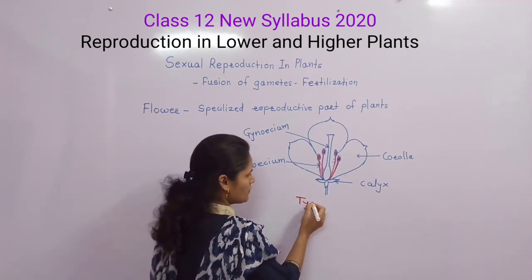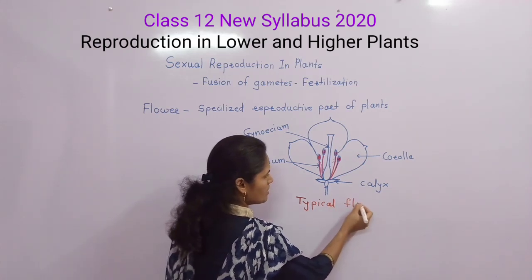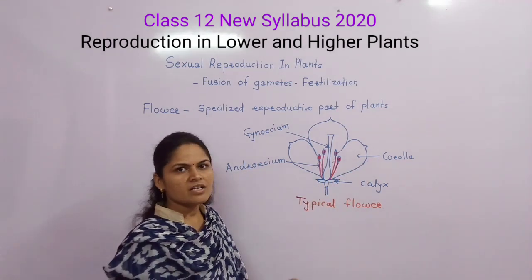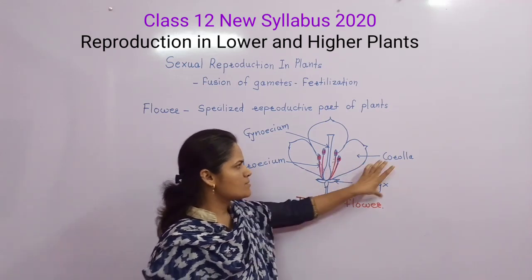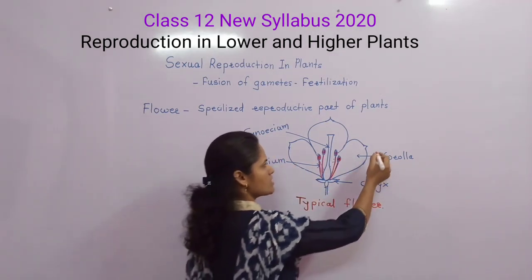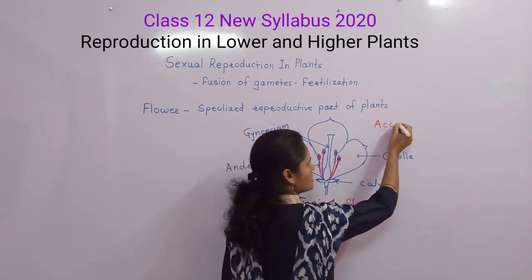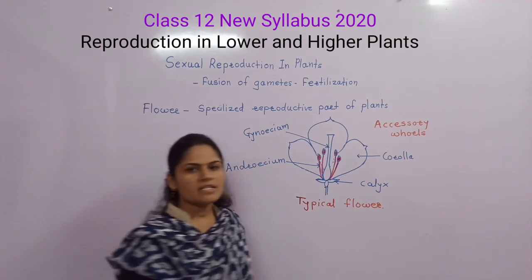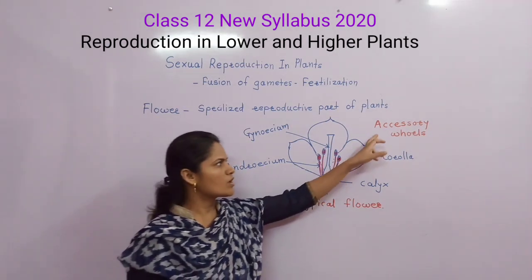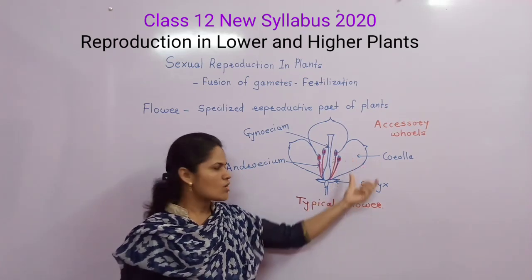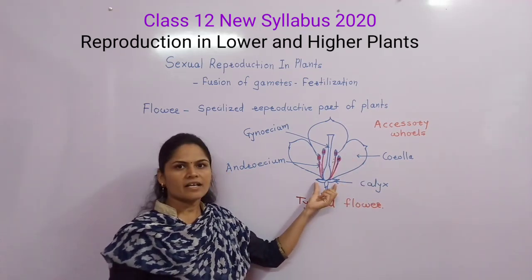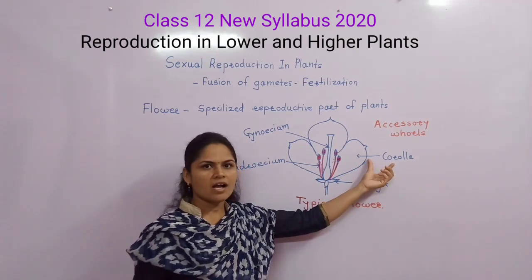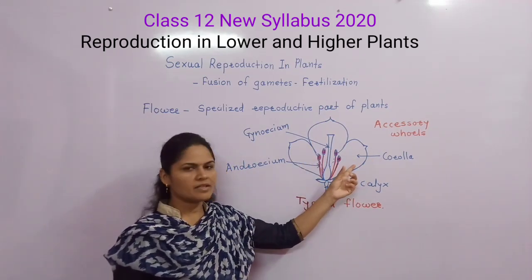A typical flower shows different whorls, categorized into two types. The first type is accessory whorls, which help in reproduction. Accessory whorls include corolla and calyx. Calyx consists of green-colored sepals, and corolla consists of colored petals.